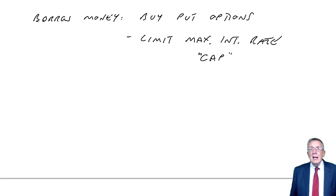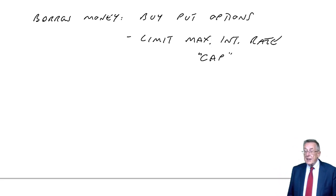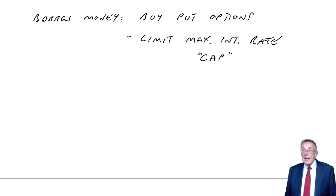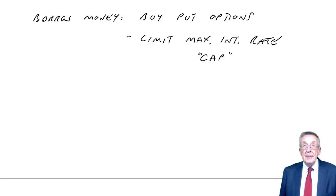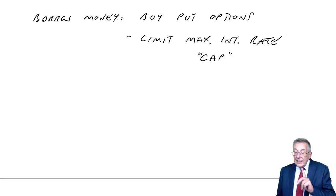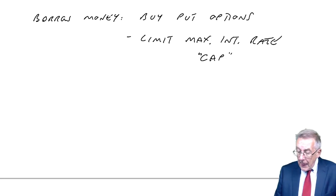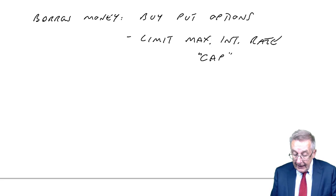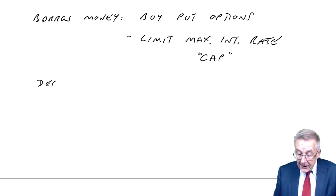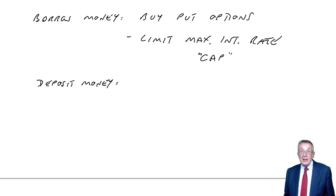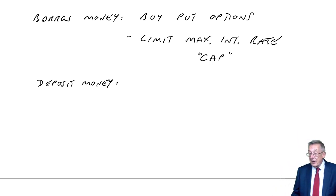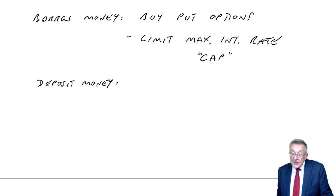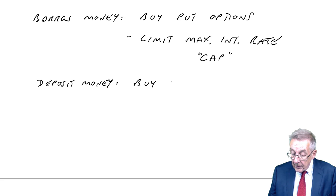In example six, we had to pay £7,000 and something in premium, which in a sense may have been wasted. There is a way to effectively limit the premium. If you borrow money, you buy a put option. Of course, there are also lots of people who are depositing money, and if somebody is depositing money, they will buy a call option.